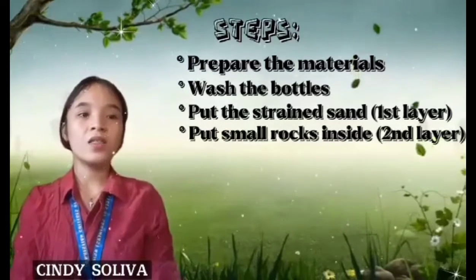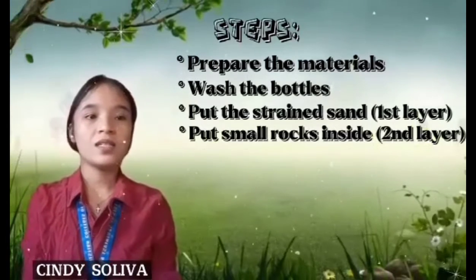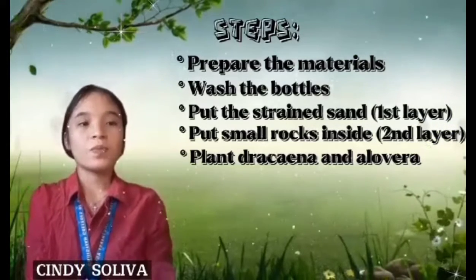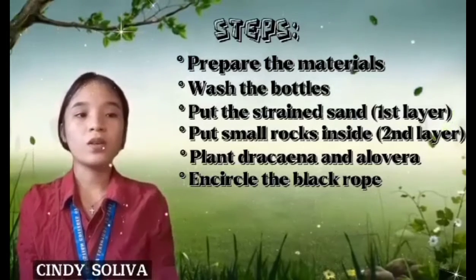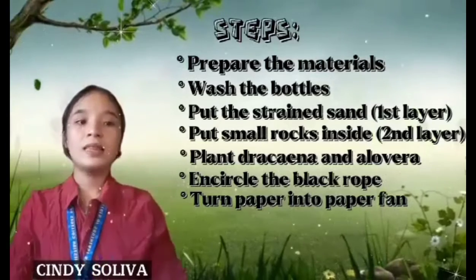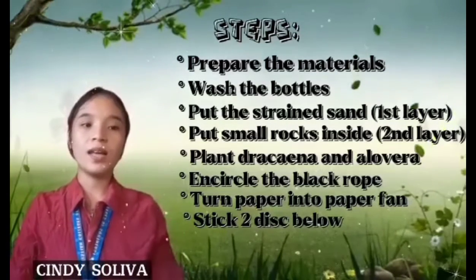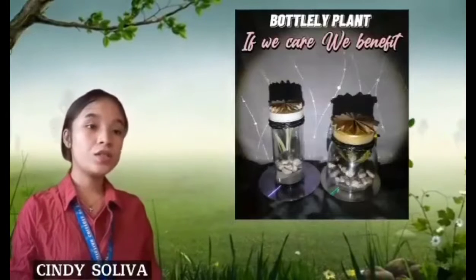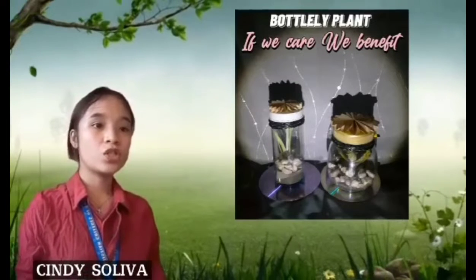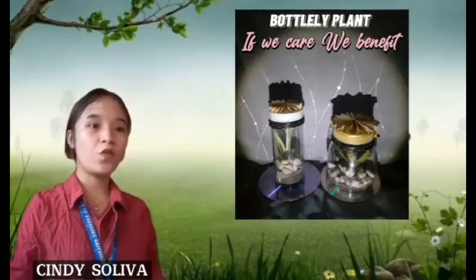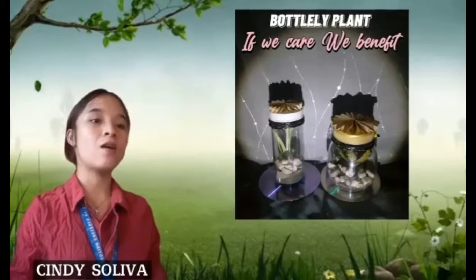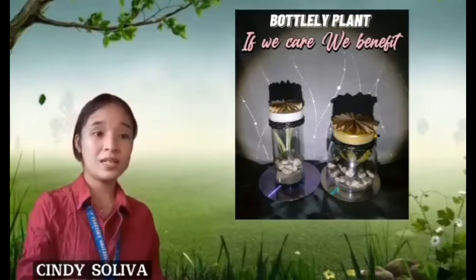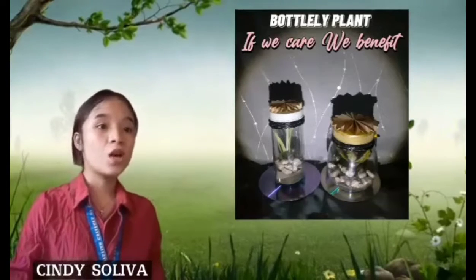I picked small pieces of white rocks that serve as the second layer. Then I decided to put trachyna reflexa and aloe vera, as they were the only plants that could fit inside the bottles. Next, I encircled the black rope around the colored part of the bottle, together with cutting paper and turning it into a paper fan. Last step, stick the disc below the bottle so that at night it creates small light reflections. As to the final output, I consider it a good decoration made from raw materials, and it is profitable as well — I can sell it because the materials are all unique.